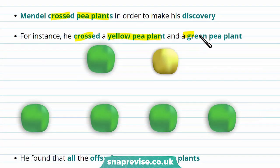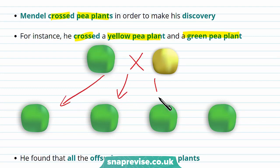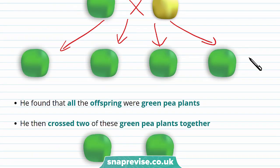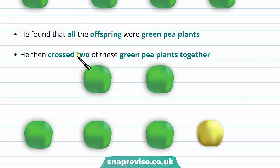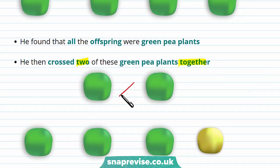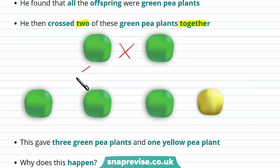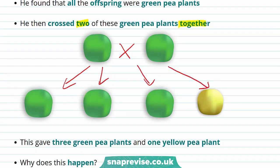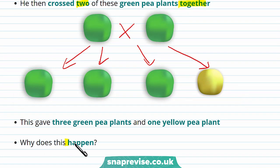He crossed a yellow pea plant and a green pea plant, and he found that all of the offspring were green pea plants. He then did a second cross — he crossed two of the offspring from the first cross shown here together. Once he crossed these two, he found that three of them were green but one of the pea plants was yellow. So how does this yellow pea plant appear from the green ones?